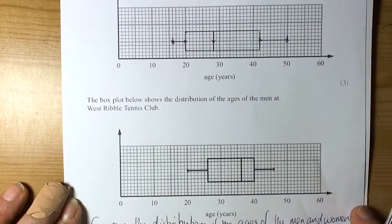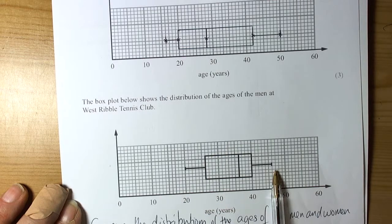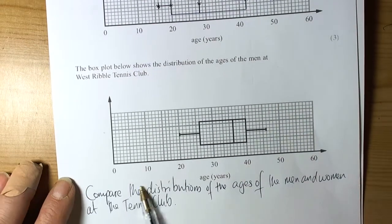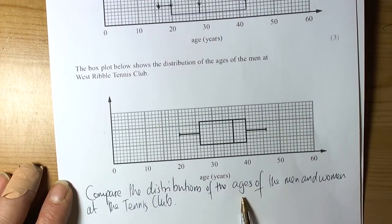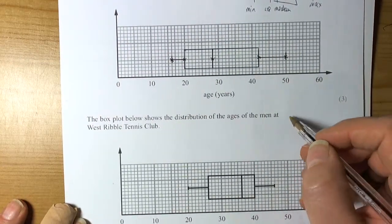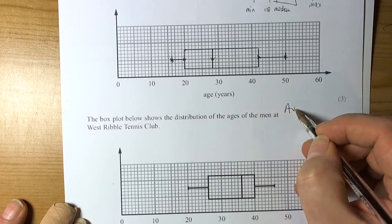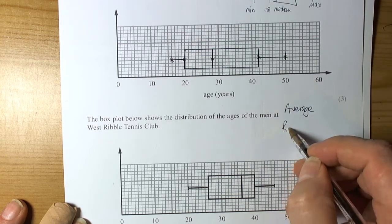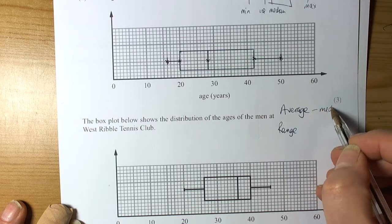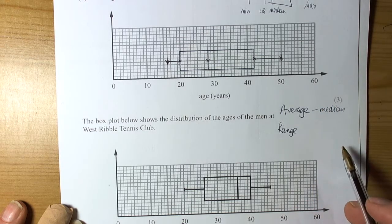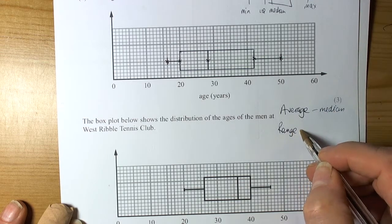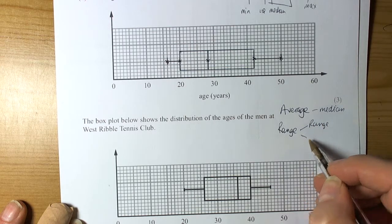The question has shown two box plots, one you've drawn yourself and one they've already drawn for you, which was for the distribution of the men at the same club. The classic question then would be to compare these distributions. Now, what you've got to realize when you're doing comparisons with box plots is, again, like all comparisons of data, we need to compare an average and we need to compare a range. And there's several things we can do here. So, the average will compare is the median, because that's what you're using to plot as part of the box plot, to show the middle position of the distribution. And the range, well, you've got two types of range. You've got the ordinary range and we've got the interquartile range.